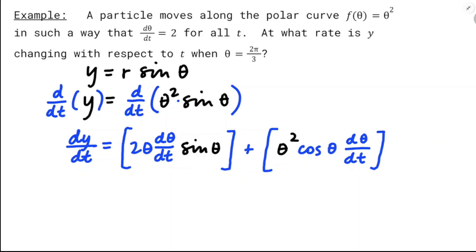So the derivative of sine is cosine, we leave the inside the same, and then we multiply by the derivative of the inside for the chain rule. Now I'm going to go to plug in θ equals 2π/3, and so I'll get 2θ, so that's going to be 4π/3, times dθ/dt, which they told me was 2, and then I'll multiply by sine of 2π/3, and that's going to be √3/2.